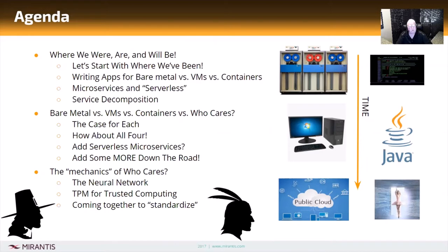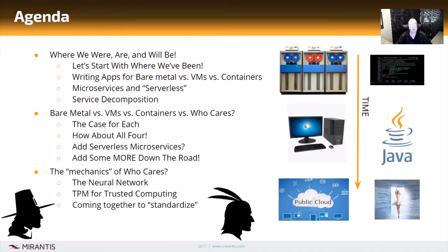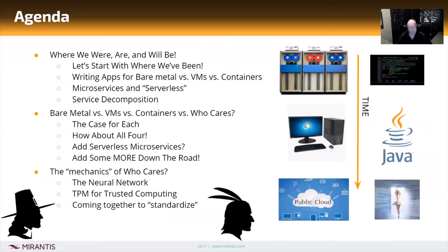Then we'll go through the physical infrastructure elements of bare metal versus virtual machines versus containers versus a category I call 'who cares.' The 'who cares' is sort of an outlandish thought on my part as to where we're headed beyond serverless computing. I'm going to make a case for each and how about using all four of them in any different scenario, and why you might want to do that, bringing in serverless and microservices environments involving libraries from public cloud offerings.